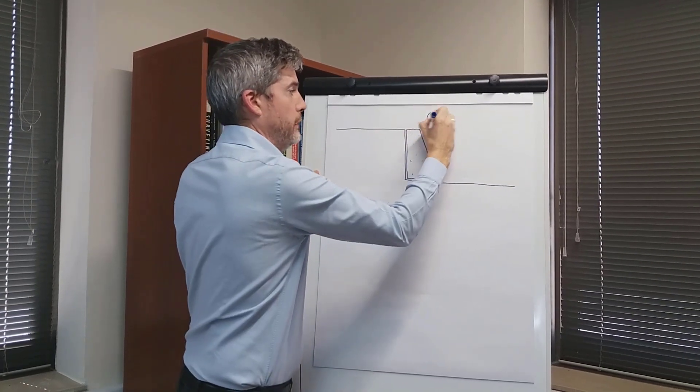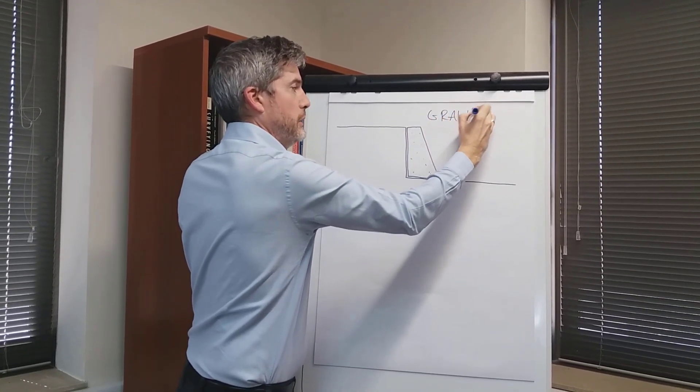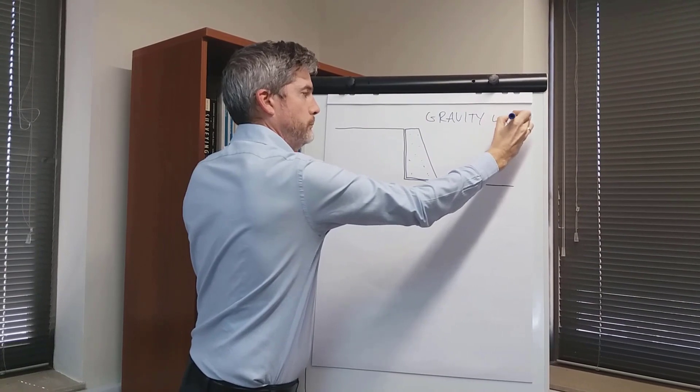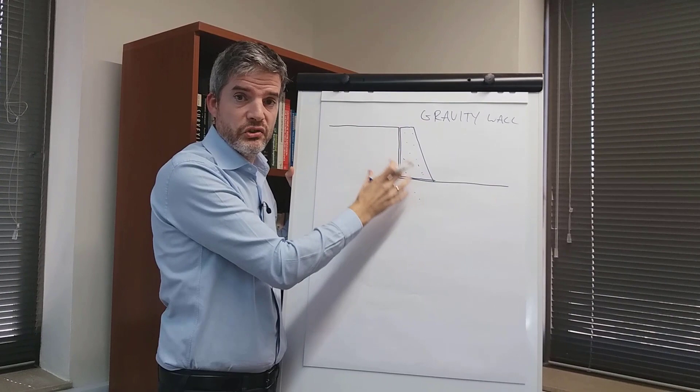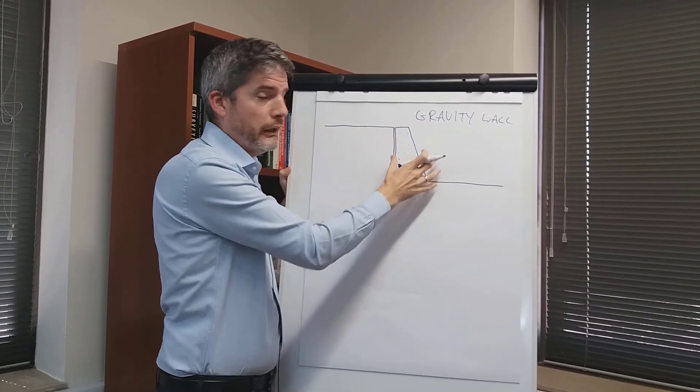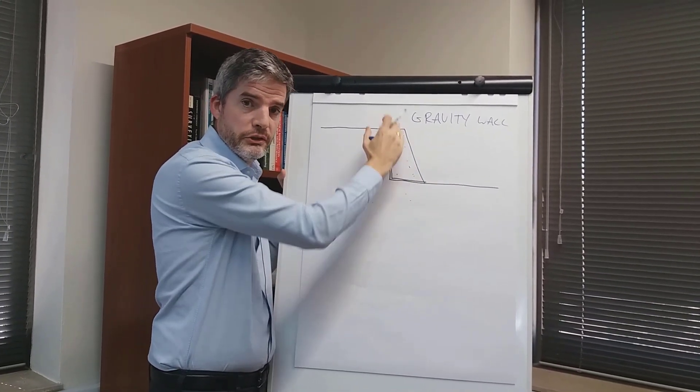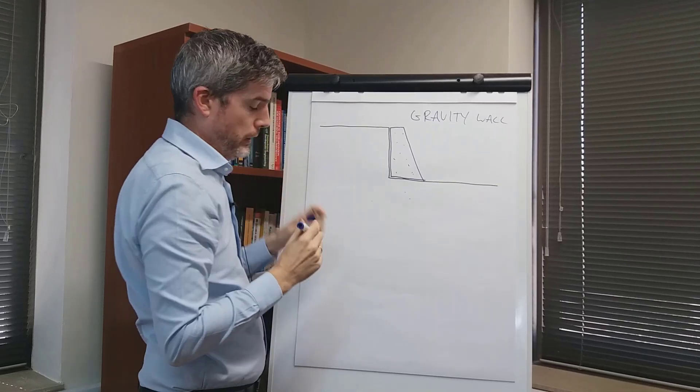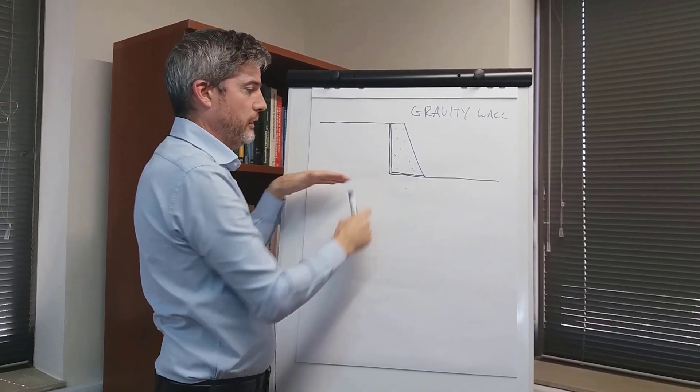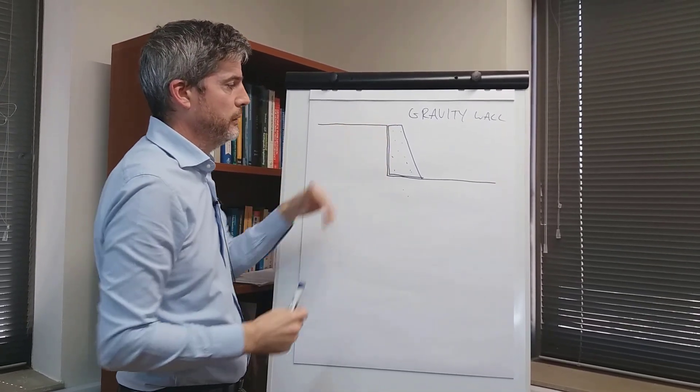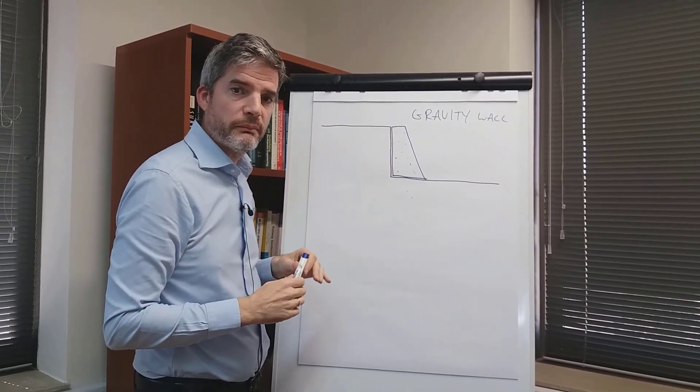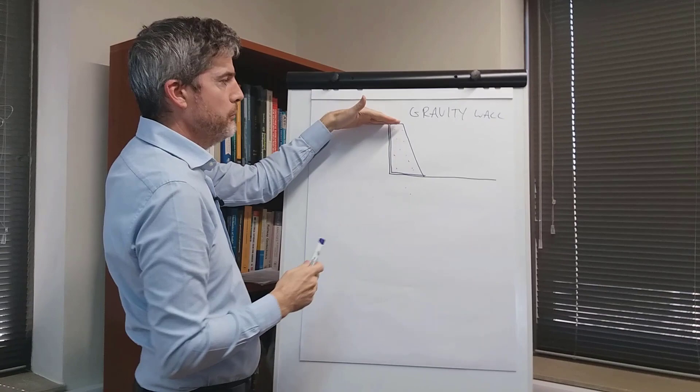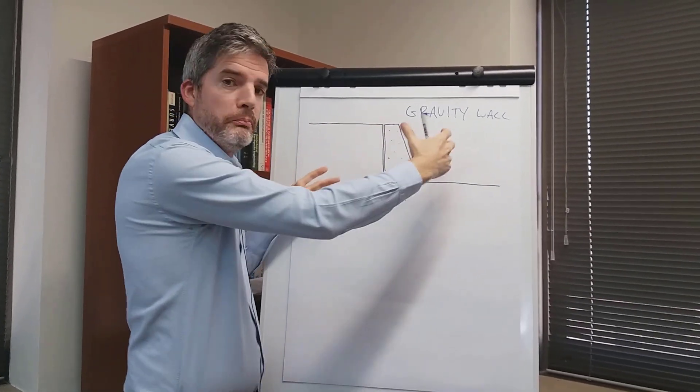That is the gravity wall. Advantages: it's easy and cheap to construct, can look quite nice if made from masonry or given a nicer facing. Disadvantages are if there's a restriction on height.